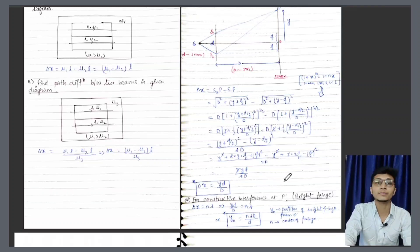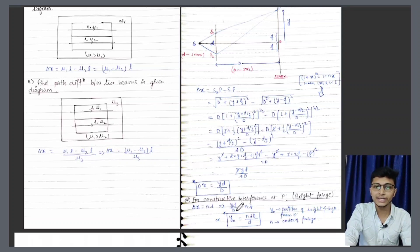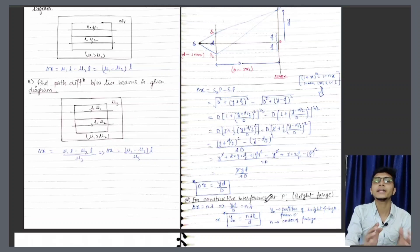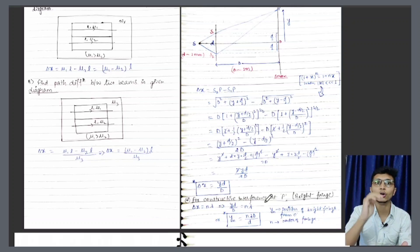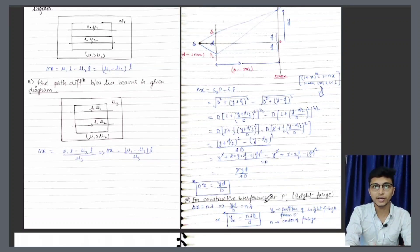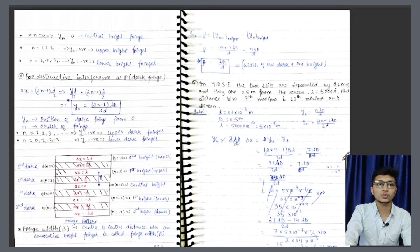Interference conditions nikale the: ki delta X = n lambda. Aur delta X ki jagah hum Y d by D bethate hain — Y small d by D. Aur Y ko ek side rakh denge: N lambda D by d — aur yeh N hai order of fringe. Yani ki fringe pattern jo milta hai — ek light aur dark band ka alternate pattern banta hai — that is the fringe pattern. So yeh constructive interference ka condition aa chuka hai.